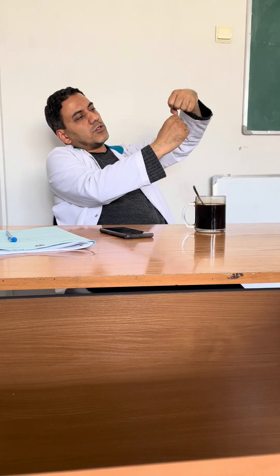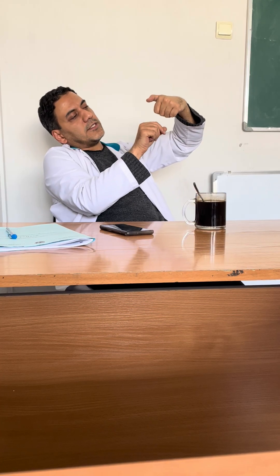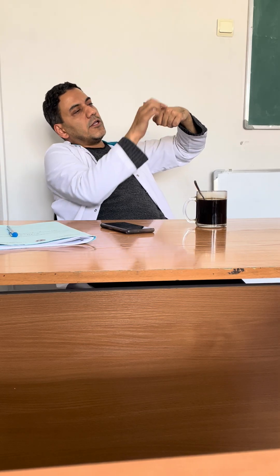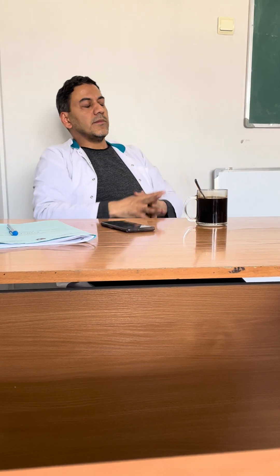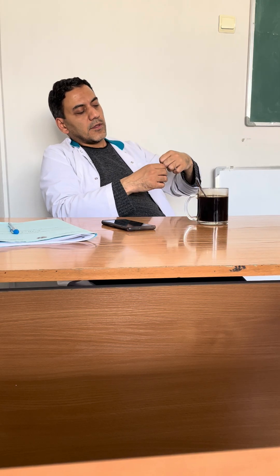Bone makes up about 50 to 60 percent of our body weight. Then we have joints. The joint consists of two bone ends, cartilage, a space filled with synovial fluid, a synovial membrane capsule, ligaments, and muscle ends. This is the joint structure.